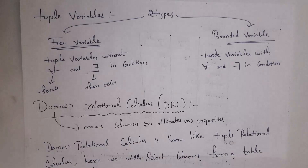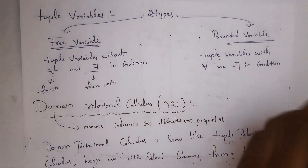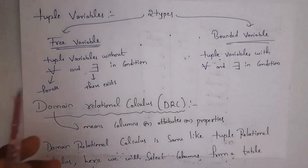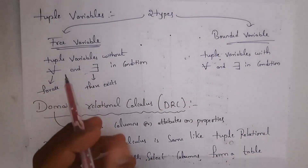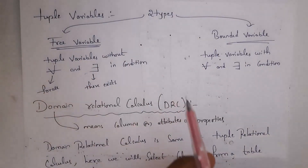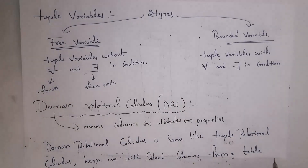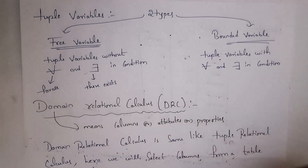Tuple variables are classified into two types: free variables and bounded variables. Variables which do not contain 'for all' or 'there exists' in their condition are known as free variables, and tuple variables with 'for all' or 'there exists' in their condition are known as bounded variables.